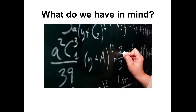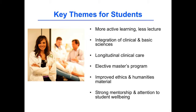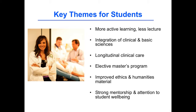Big picture: for students, we want education at Geisel to be more engaging and more about active learning — harnessing the strength of lectures while complementing them with small group and other active learning approaches. We want to integrate the clinical and basic sciences together, not one year of one and one year of the next. We want to provide what clinical care looks like as a longitudinal activity starting in the first year, offer an elective master's program, build in ethics and humanities coordination, and do so in a context of strong mentorship and attention to well-being.